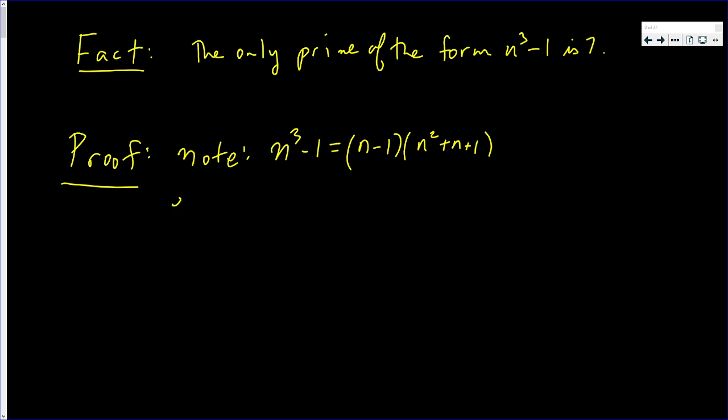So let P be of the form n cubed minus 1. That is, P is equal to this product. P is equal to a product. Well, since P is prime, the only two factors that P can have is 1 and P.